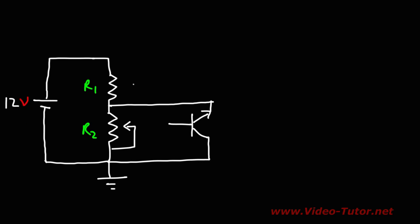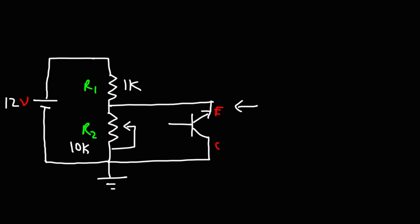R1 was set to 1 kilohm and R2 was a 10 kilohm potentiometer. Here we have the emitter and here the collector. I measured the voltage across the emitter and the collector, then disconnected the circuit to measure the current flowing through the collector-emitter region by placing an ammeter there. You would typically measure the voltage across two points — in this case the emitter and the collector.